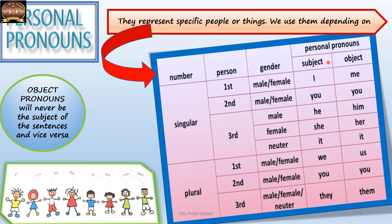The last classification is on the basis of subject and object. Subject pronouns begin sentences and are the doers of the action; object pronouns usually come at the end and are the receivers of the action. If you memorize this table, personal pronouns will be easy to understand. One important point: object pronouns will never act as the subject of a sentence, and subject pronouns will never act as object pronouns.